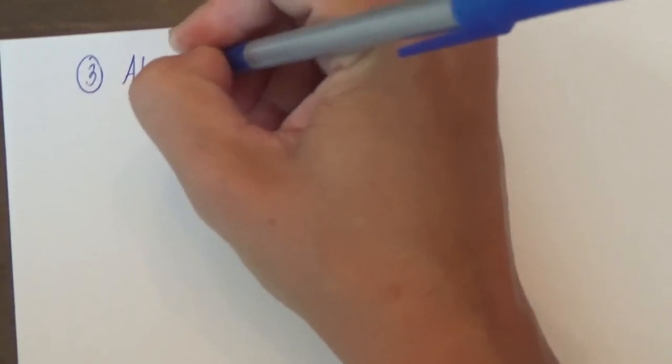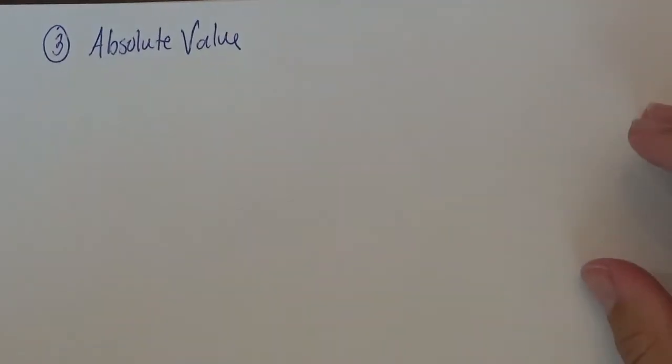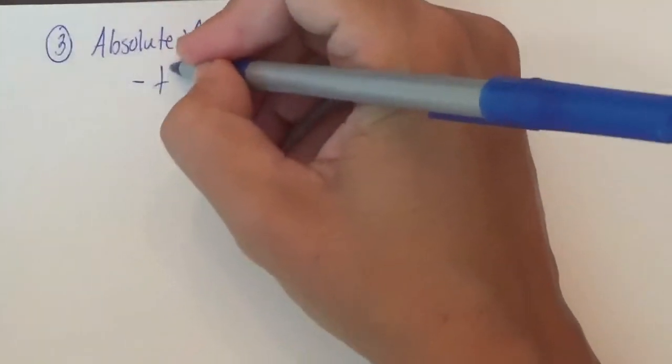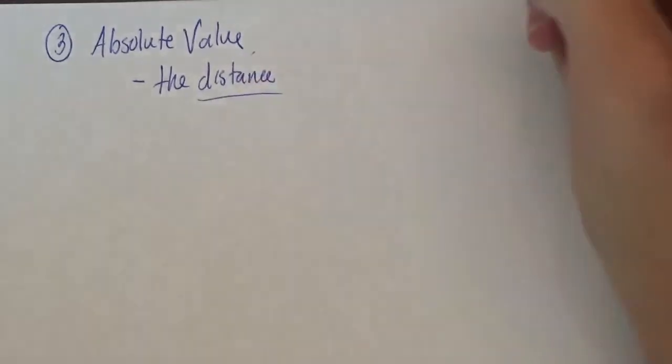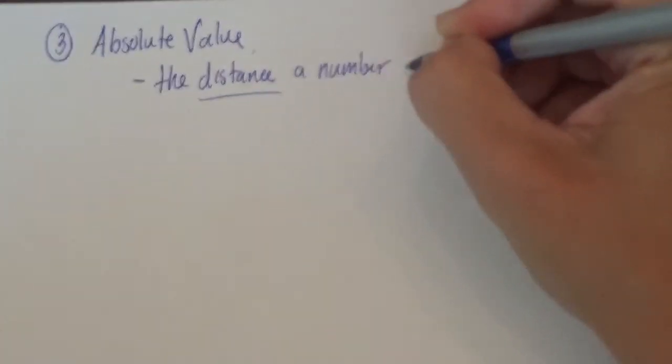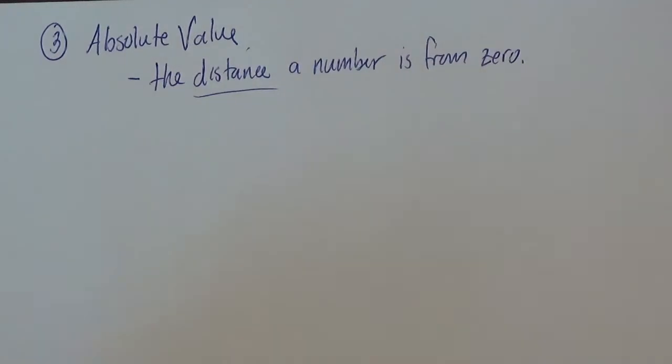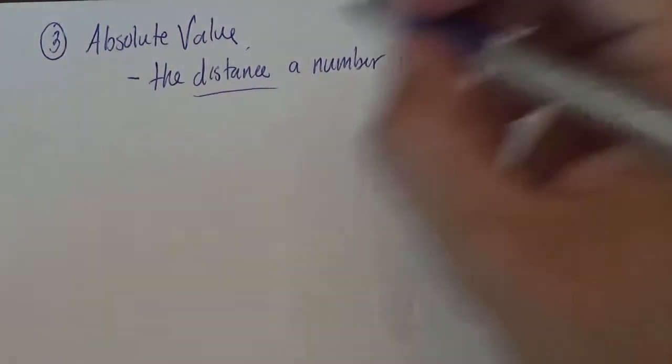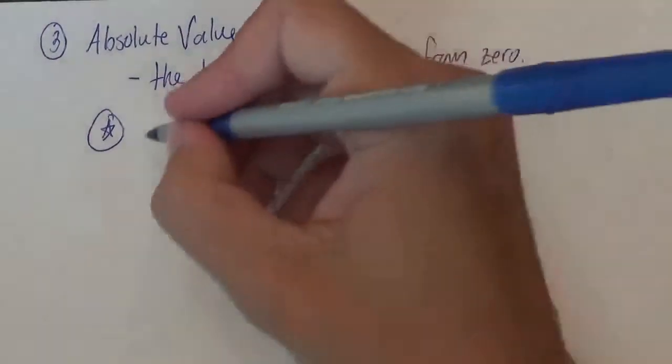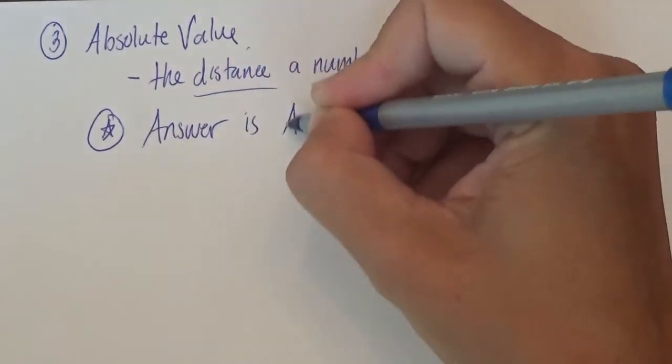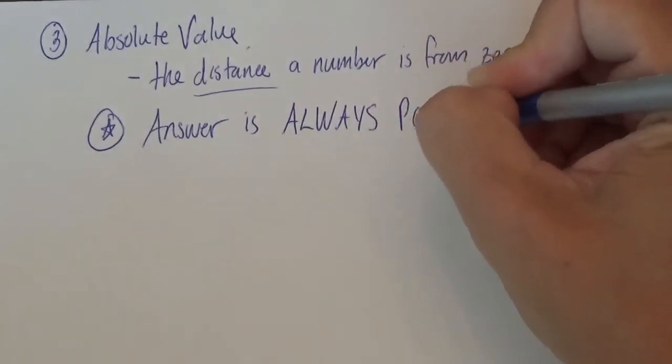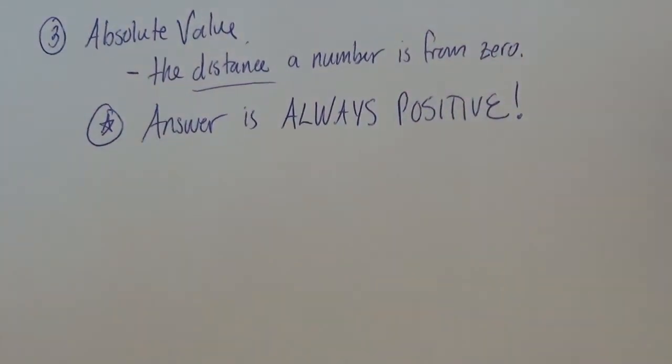Now for my favorite part. The last thing we have to learn. Absolute value. Now let me write the definition and then we'll talk about how to figure it out. So the definition says it's the distance, and that word's important, the distance a number is from zero. So we're going to pause again and talk about that word distance. So hopefully now we understand since it's a distance, the answer is always going to be positive. So how on earth could I trick you? I don't think I can. I'll try, but I don't think I can.